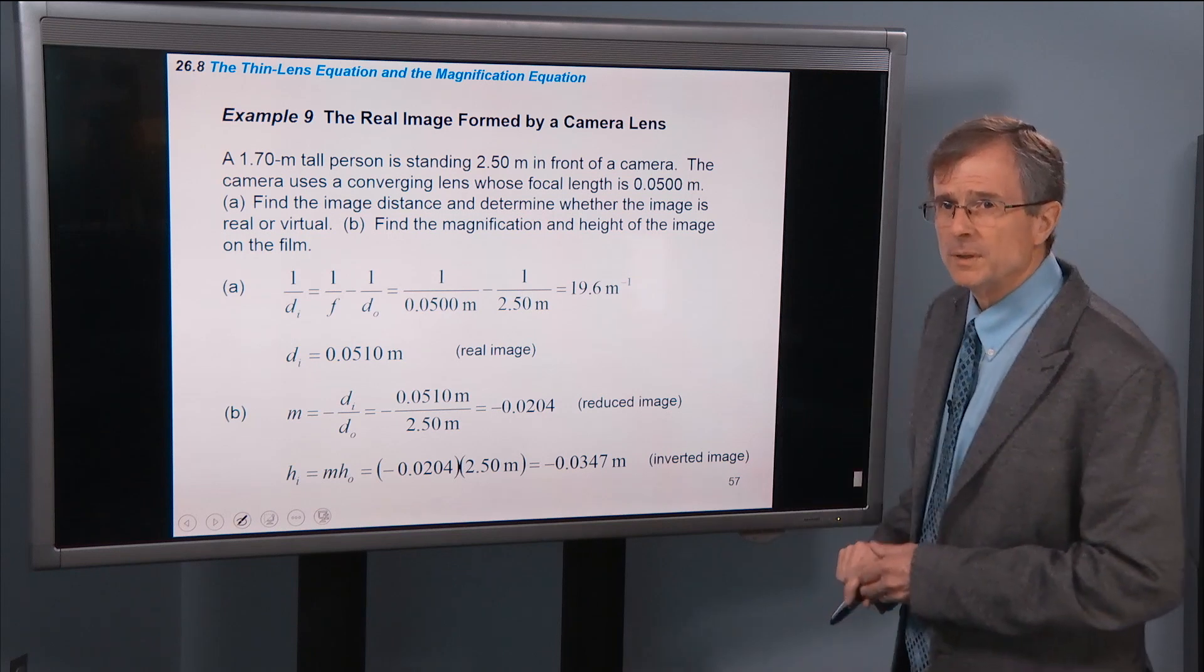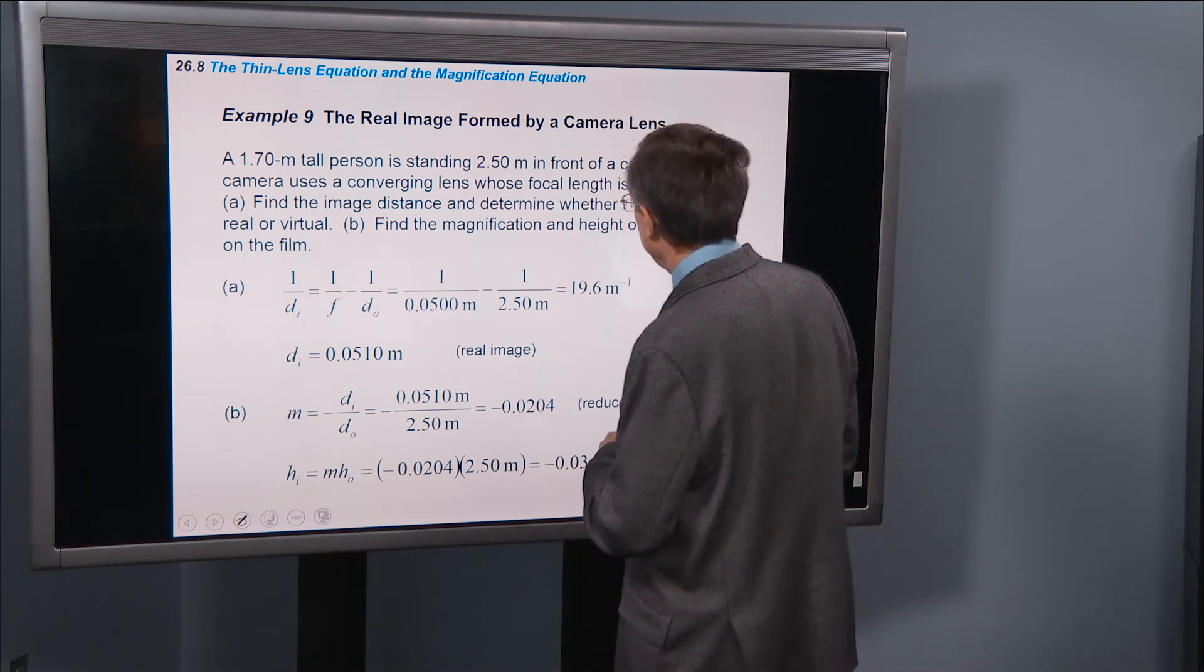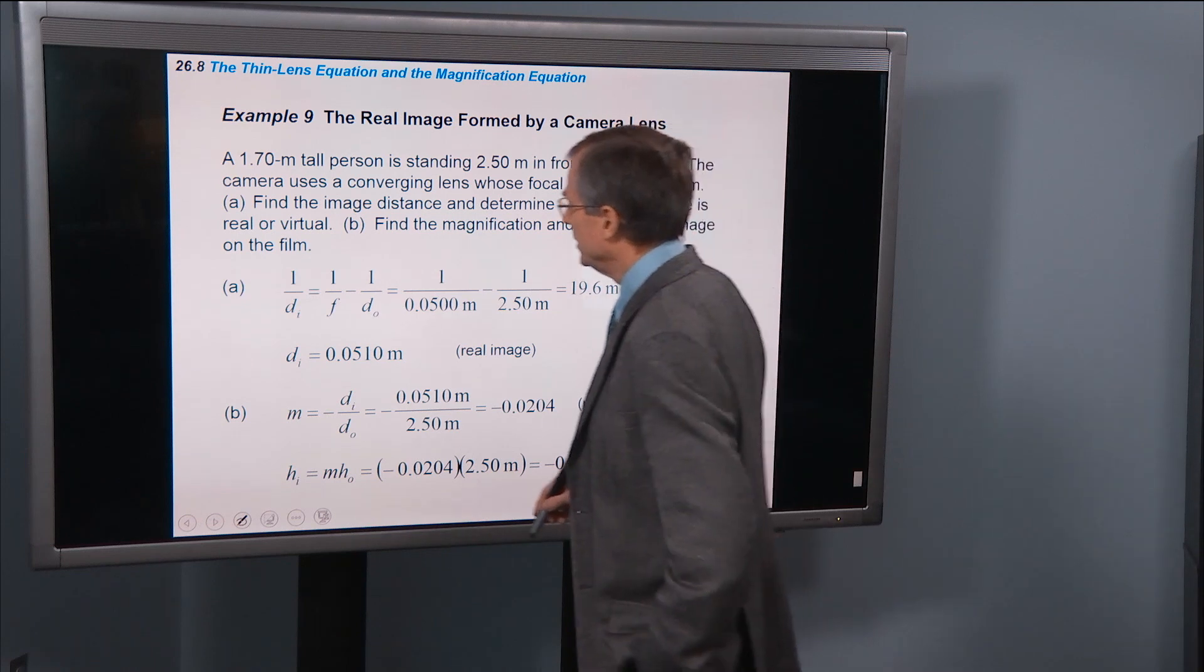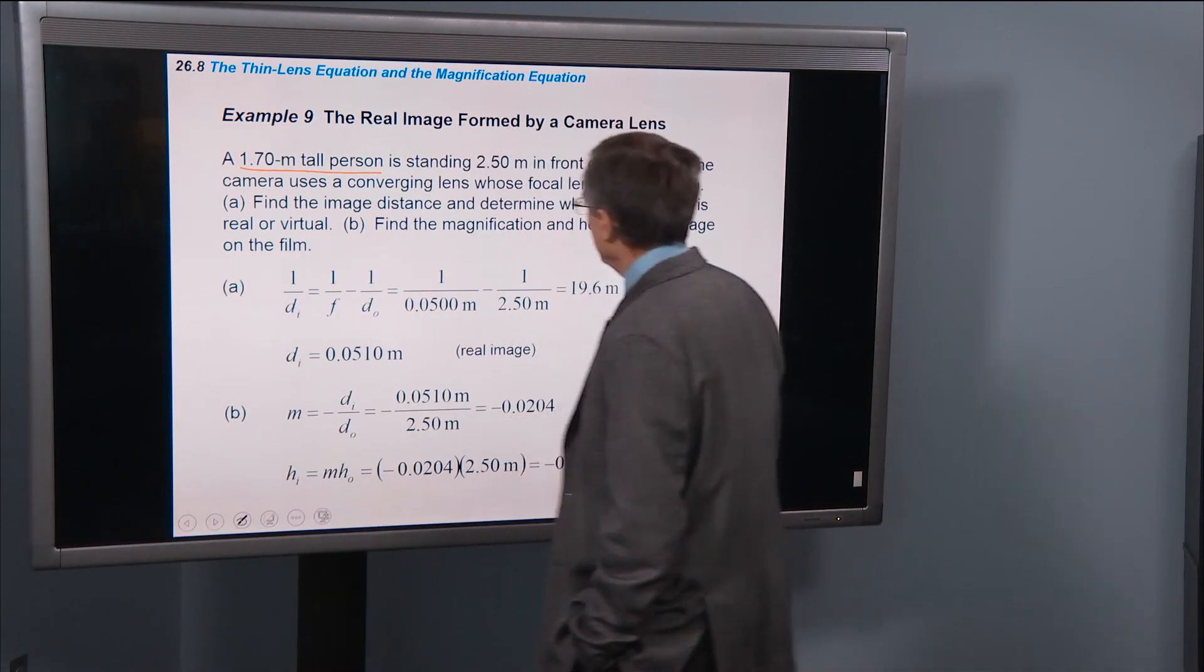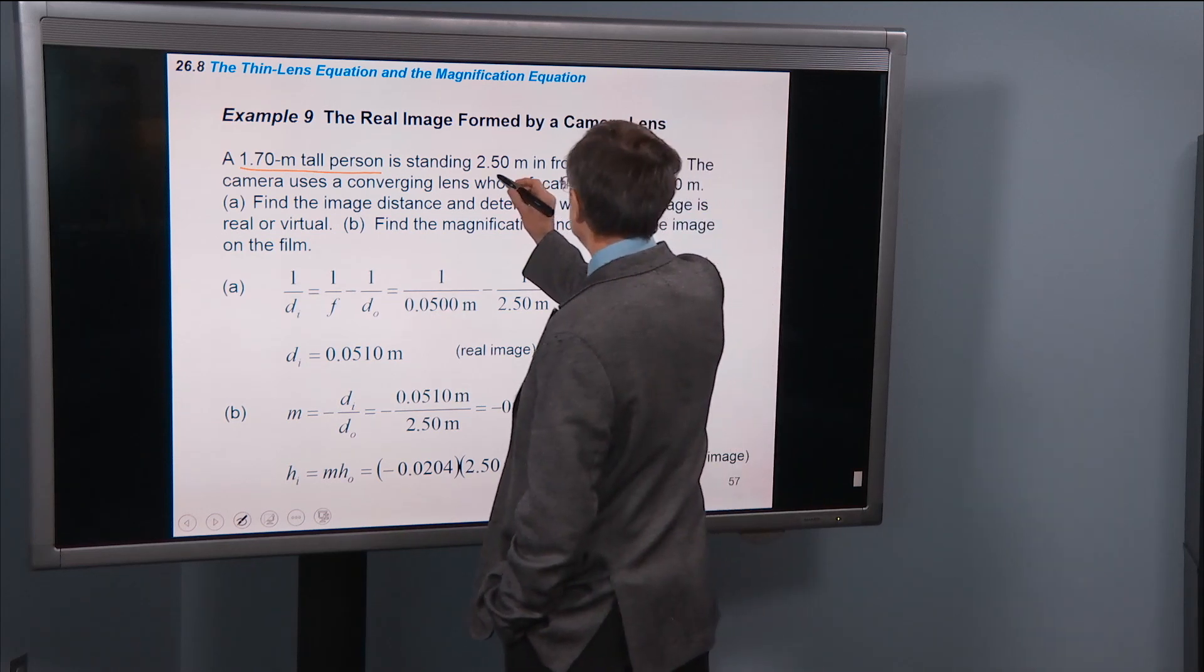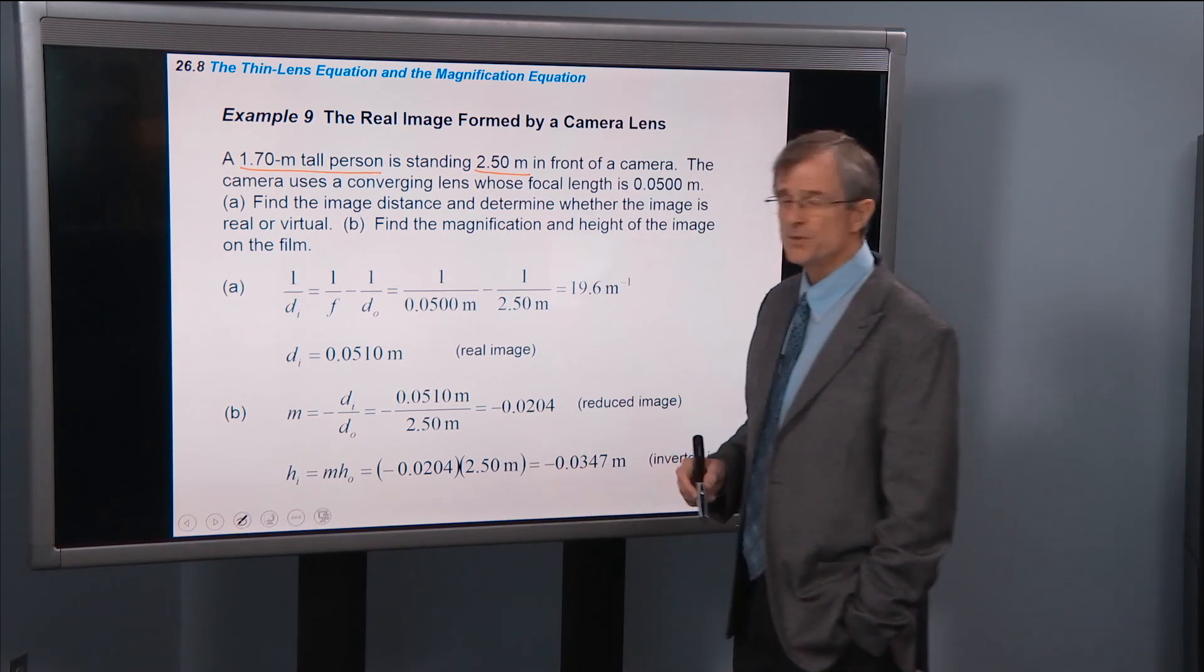Let's do an example. The real image formed by a camera lens. A 1.7 meter tall person, that's our object, standing 2.5 meters in front of a camera, that's our object distance.